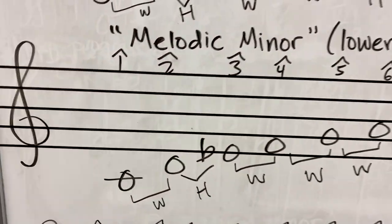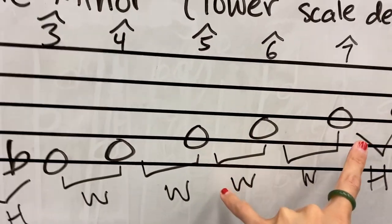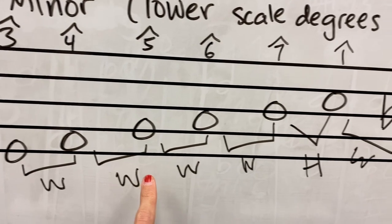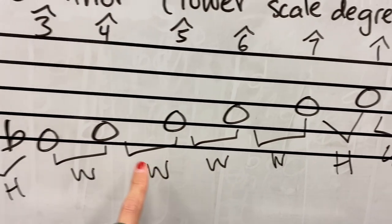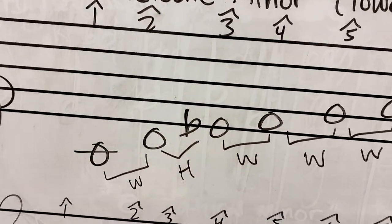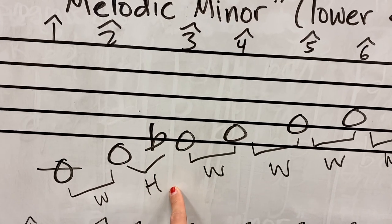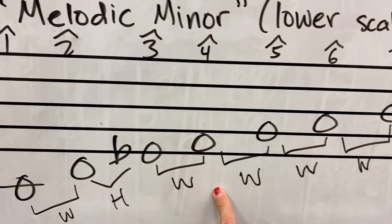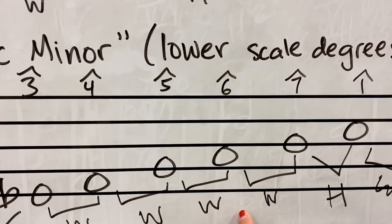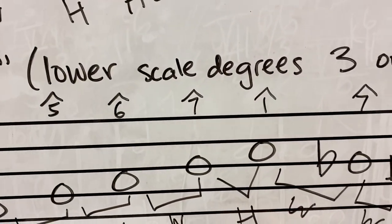It creates an interesting effect — if you take the top four notes, C, B, A, and G, that's from the major scale, and the bottom four notes are like natural minor. Ascending: C to D is a whole step, D to E-flat is a half step, E-flat to F is a whole step, F to G is a whole step, G to A is a whole step, A to B is a whole step, B to C is a half step.